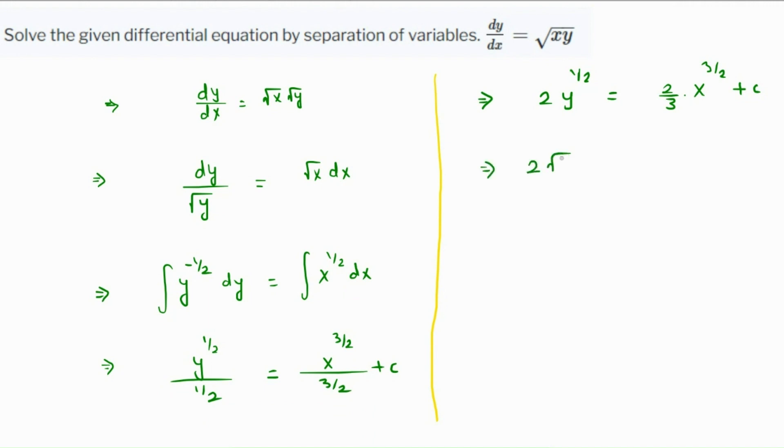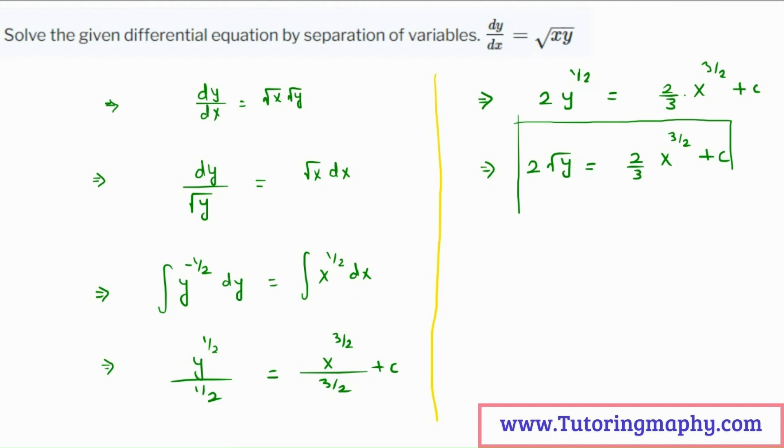This can be rewritten as 2 root y equals 2 over 3 x raised to 3 over 2 plus c. So this is the final answer. Thank you.